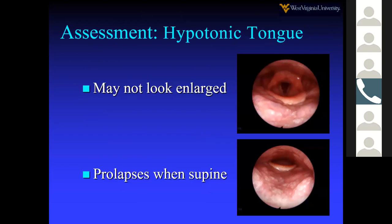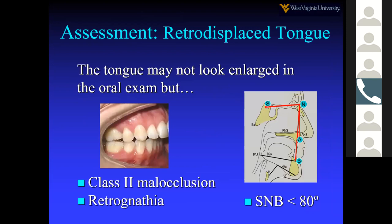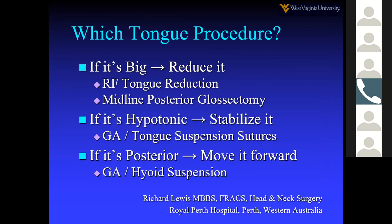If a patient is already obstructed in a sitting position, placing them supine won't provide additional diagnostic information. If they look open upright but fall back supine, that guides you toward certain procedures. Cephalometrics showing Class II malocclusion with retrognathia can set the tongue back even if it appears normal in size. Richard Lewis's framework is simple: if the tongue is big, reduce it; if it's hypotonic, stabilize it; if it's posterior, move it forward.